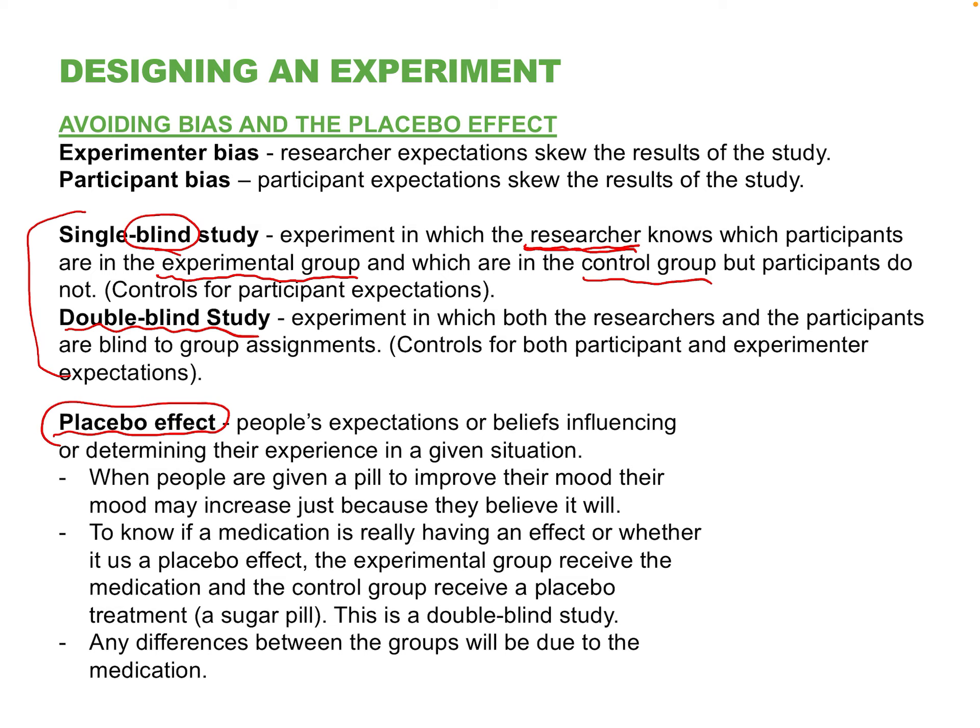A double-blind study means that in addition to the volunteer not knowing which pill they're taking — they just know they're getting Pill A or Pill B, they look the same and they're not told — the researcher handling the treatment also does not know which is which.